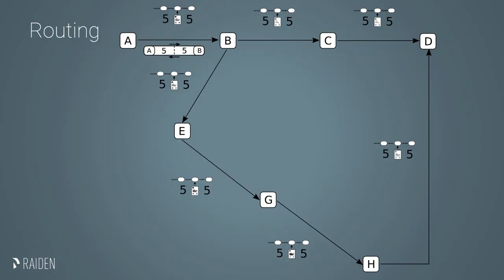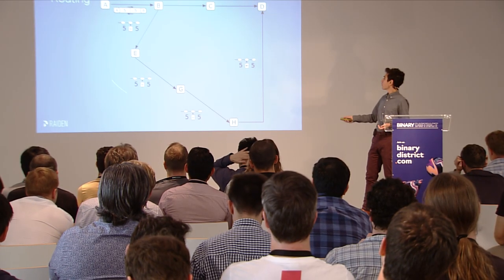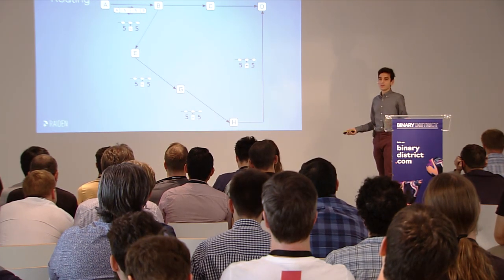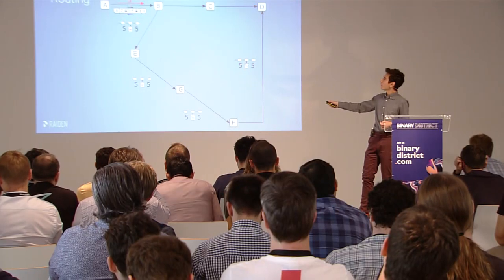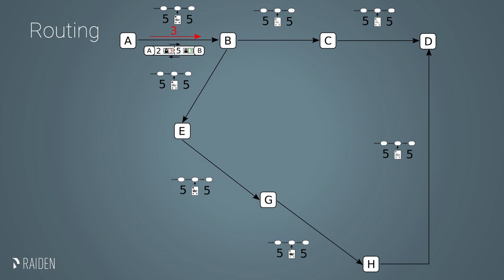Routing: how do you know the path through which you'll route the transfer? We do not have a global view of channel capacity. Let's assume the capacity is five tokens from each side for each payment channel. A is the initiator and wants to route the transfer to D. This is the on-chain deposit capacity. He tries to send to B — it's successful because capacity was enough — and there is a locked amount for this pending transfer. Then B tries to route it through the smallest path, the fewest number of hops, and there's enough capacity, so it continues.